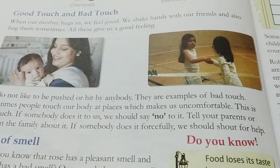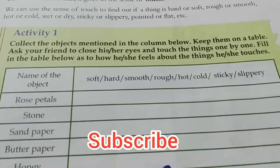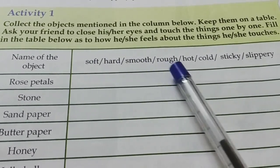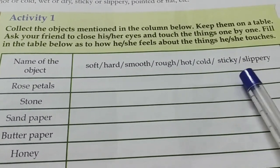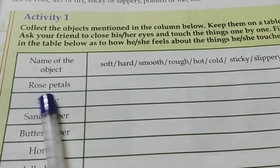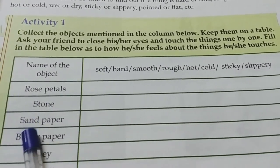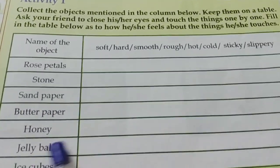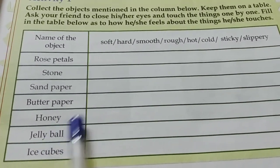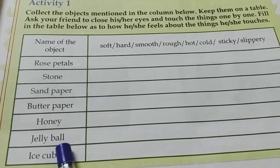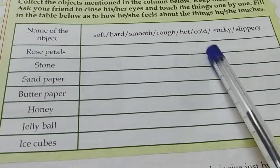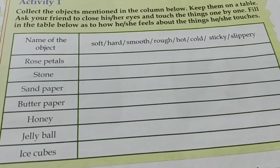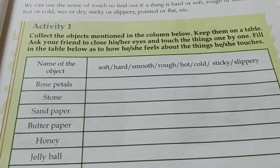Here we have an activity where names of objects are given and you have to describe how they feel — soft, hard, smooth, rough, hot, cold, sticky, or slippery. Rose petals are soft and smooth. Stone is hard. Sandpaper is rough. Butter paper is slippery. Honey is sticky. Jelly ball is also sticky. Ice cubes are cold.